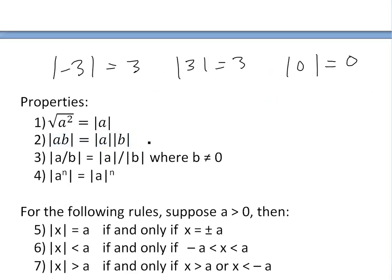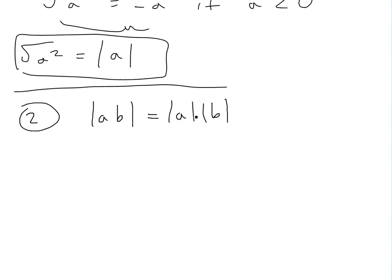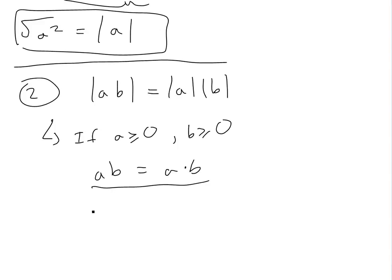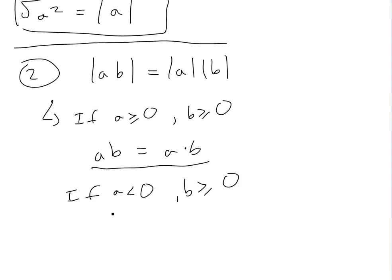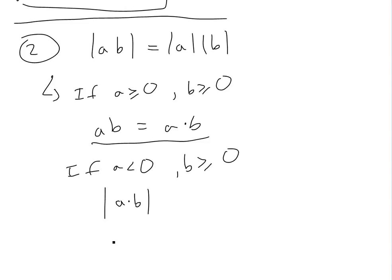Now property two basically states the absolute value of A times B is equal to the absolute value of A times the absolute value of B. This is pretty straightforward. If A and B are both greater than or equal to zero, then A times B is just a positive number, and absolute value of A is A and absolute value of B is B — so this is true. If A is less than zero and B is greater than or equal to zero, then absolute value of A times B: since A is negative, to make it positive it's just negative A times B, which equals the absolute value of A times B.